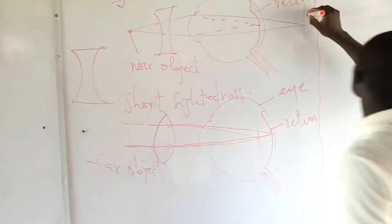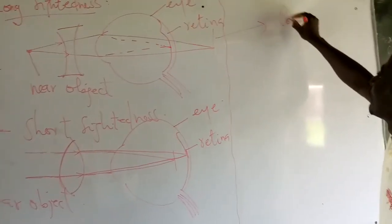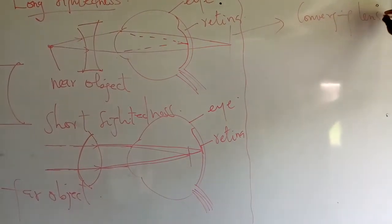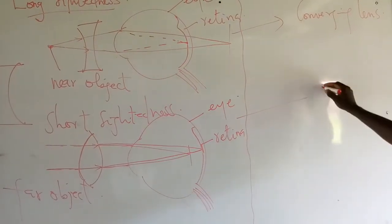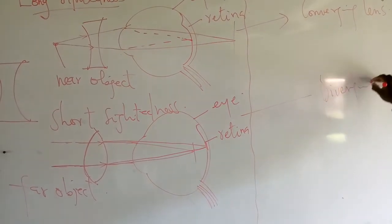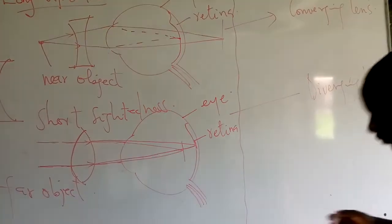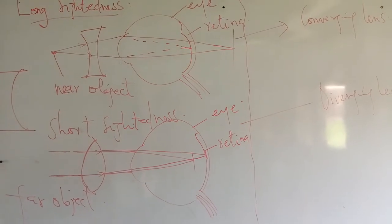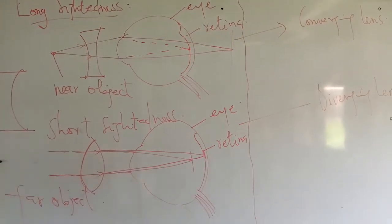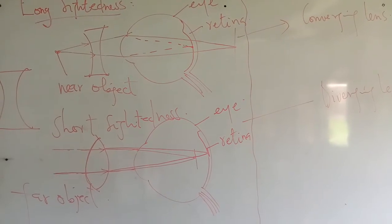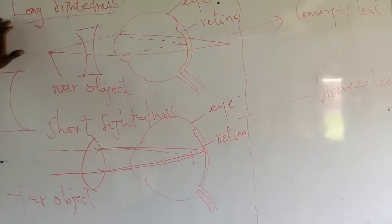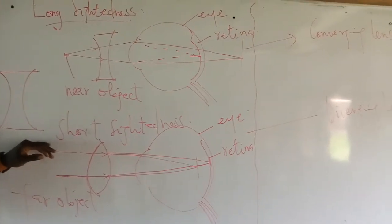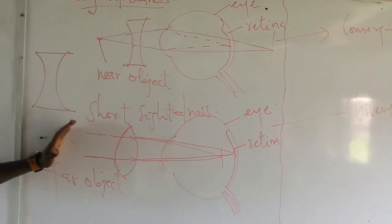So for long-sightedness you need a convergent lens, and for short-sightedness you need a divergent lens. Practically, when you are in a class and a person complains that sitting in front of the class they can't see, that person is suffering from long-sightedness. And if another person says that when sitting far from the board they can't see, then that person is suffering from short-sightedness.